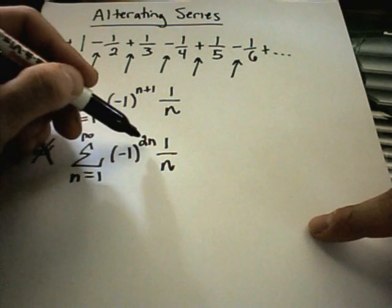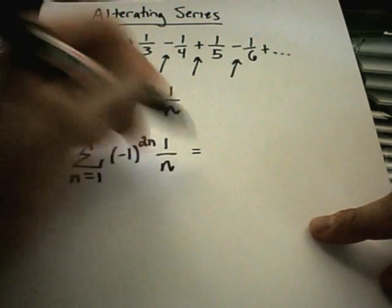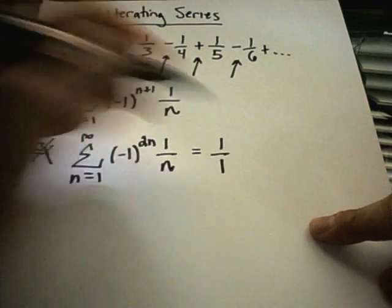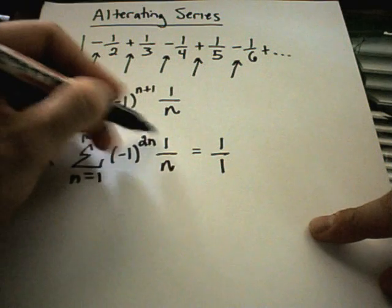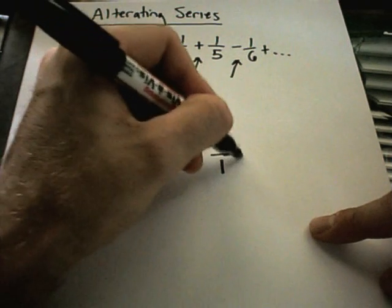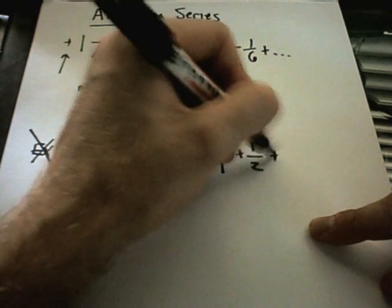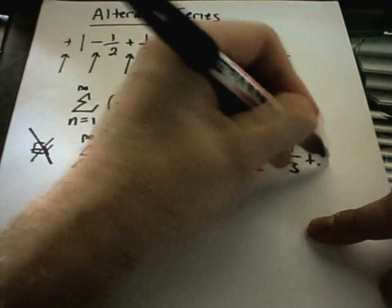But notice if you plug 1 in, you'll get negative 1 squared, which is positive 1. If you plug n equals 2 in, you'll get negative 1 to the fourth, which again is going to give you a positive 1. So it's actually not alternating at all if you start writing out some terms.